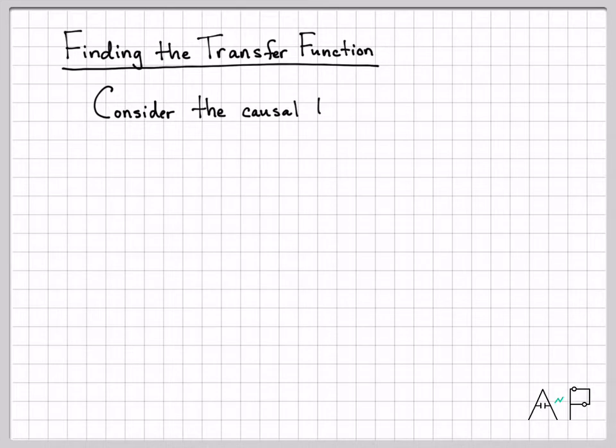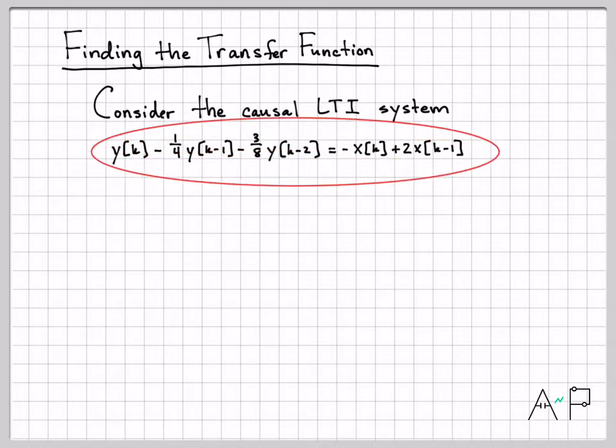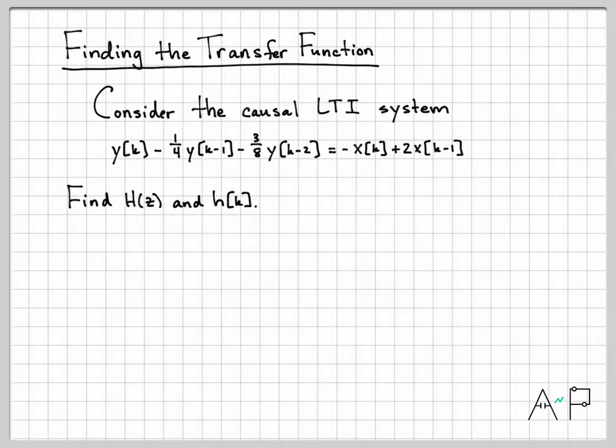Let's find the transfer function. We're going to consider a causal LTI system, a linear time invariant system, described by this difference equation: y(k) - 1/4 y(k-1) - 3/8 y(k-2) = -x(k) + 2x(k-1). We're asked to find the transfer function h(z) and the impulse response h(k). This is a time domain description via the impulse response and a z domain description via the transfer function.